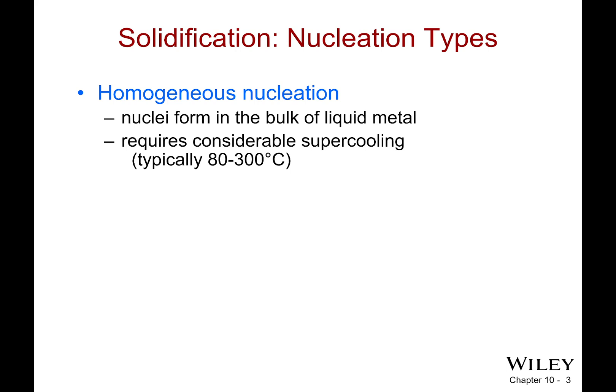A couple more terms here, and then we'll be done. So homogeneous nucleation. So it is possible for a nucleate to form in the bulk of a liquid metal, which means that it's happening, like, everywhere at once. However, you have to have a lot of supercooling for this to happen.